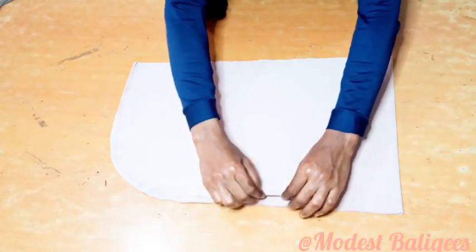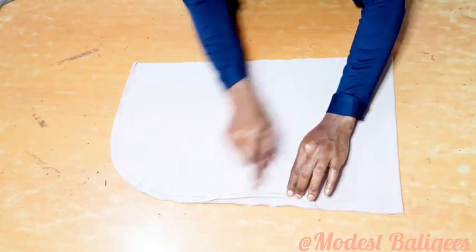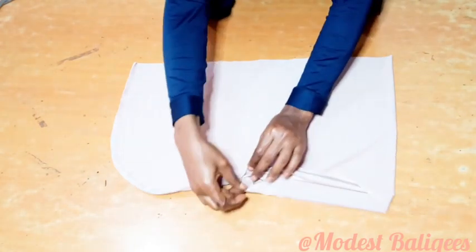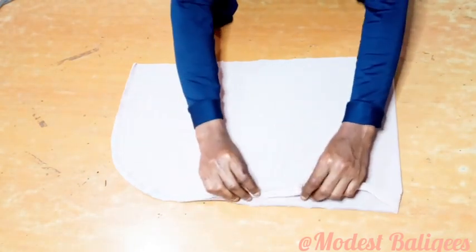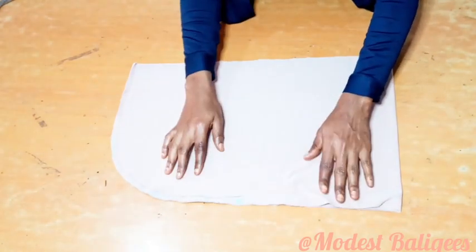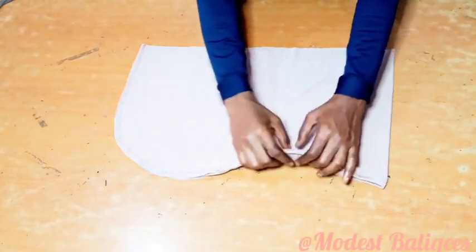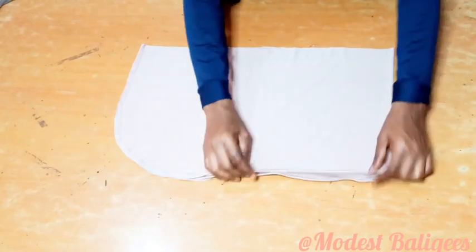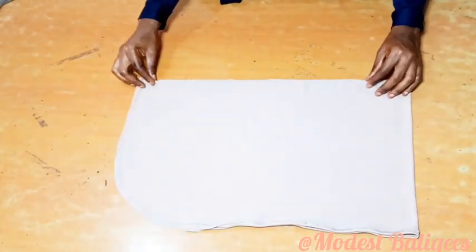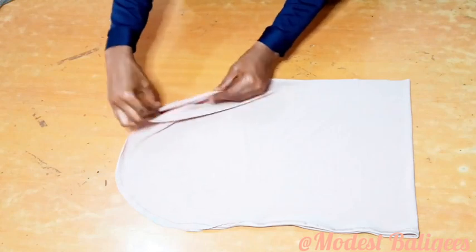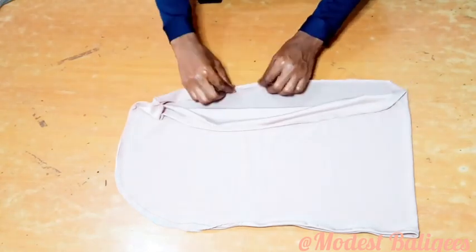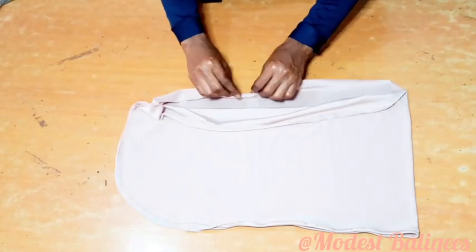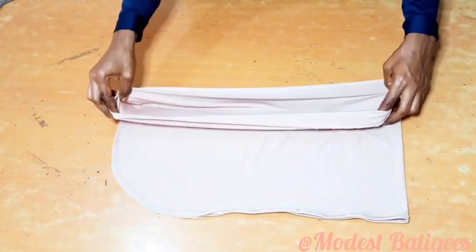The next thing I'm going to do is come to that open edge and fold it twice and then hem it. I'll come to that down part and fold it twice also and hem it. If you don't want to hem it, you can just take it to your interlocking machine and interlock it.